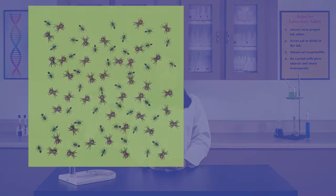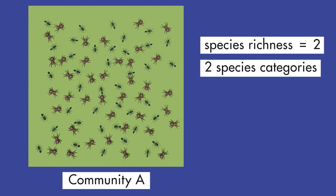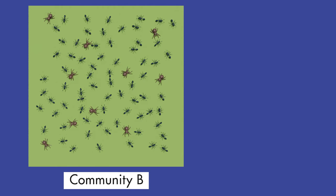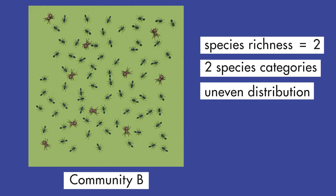The distribution of species within a community is another indication of biodiversity. In one example, community A has 40 ants and 40 spiders, giving it a species richness of 2 with an even distribution. In another example, community B has 70 ants but only 10 spiders, also giving it a species richness of 2, but the distribution is uneven. Both communities A and B have the same species richness, but their biodiversity is vastly different because of how the organisms are distributed.